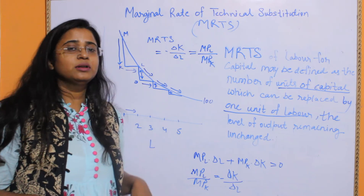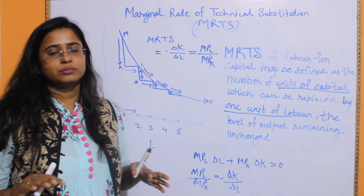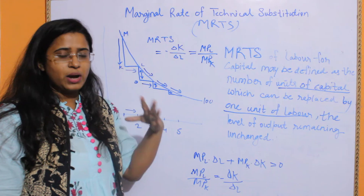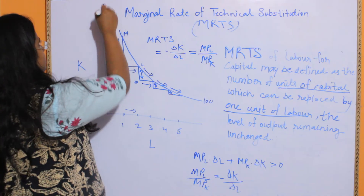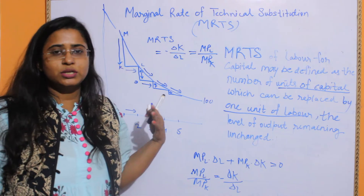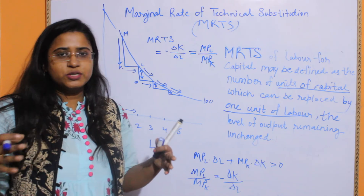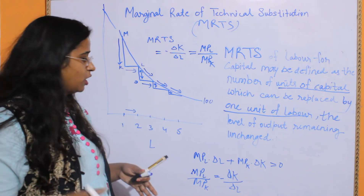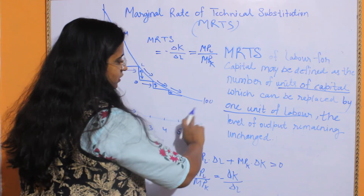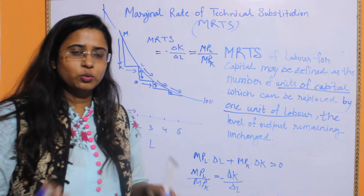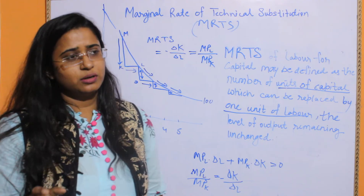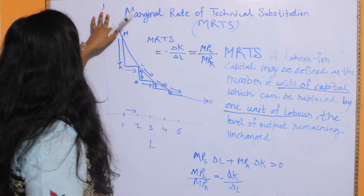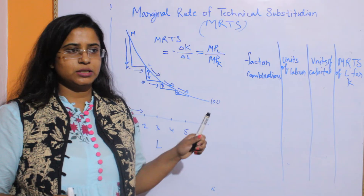One more thing: these isocon lines will not touch the axes. If the line touched the y-axis, that would mean you are using no unit of labor — is it possible that only capital exists with no human labor? That is not possible, at least for now. Similarly, the line will not touch the x-axis, as having only labor with no capital is also not possible, because you need some land and some money to actually conduct the production process. So these lines will never touch the axes.